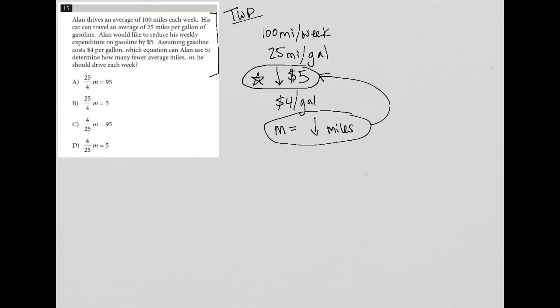So looking at the answer choices, I do see that each choice pretty much looks the same, except for the fraction that's being multiplied by M. And then the answer is either ninety five or five.